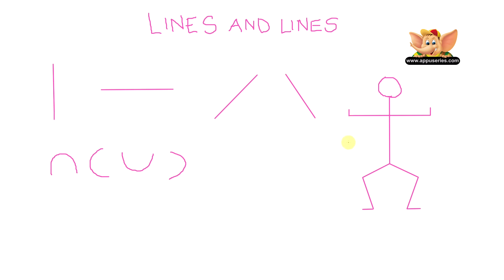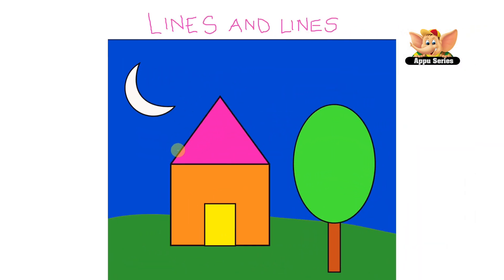Wow, what do we have here? We have a dancing figure, right? Why don't you try and use some of these lines and also draw some different kind of figures? Now that we know what these different lines are called, let's take a look at this image and identify the different lines in it.